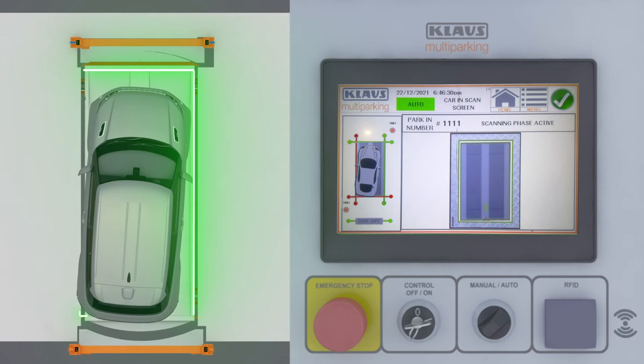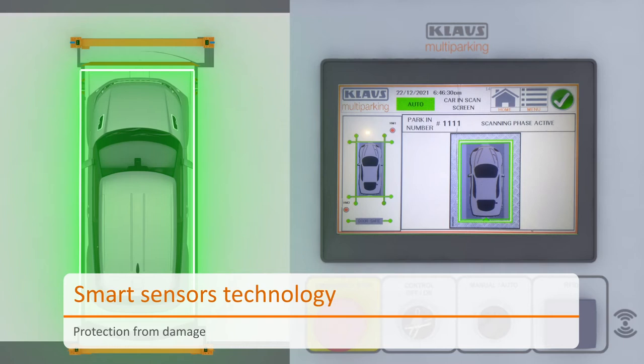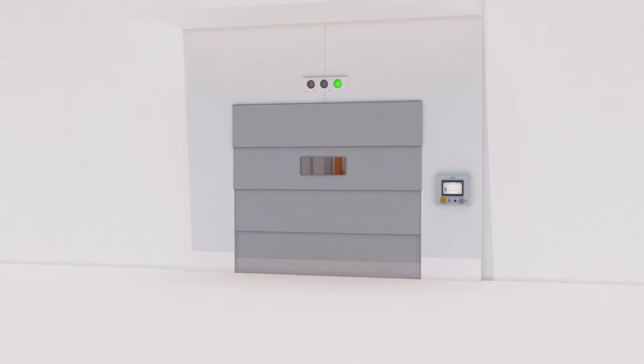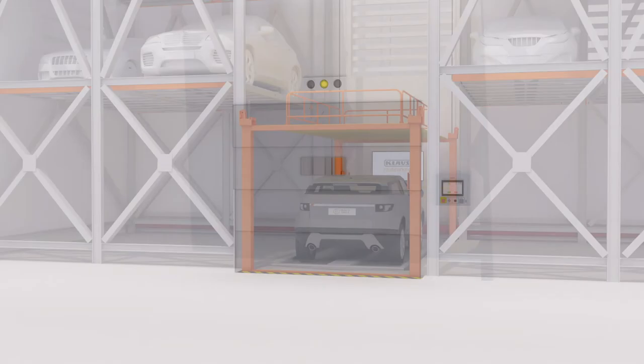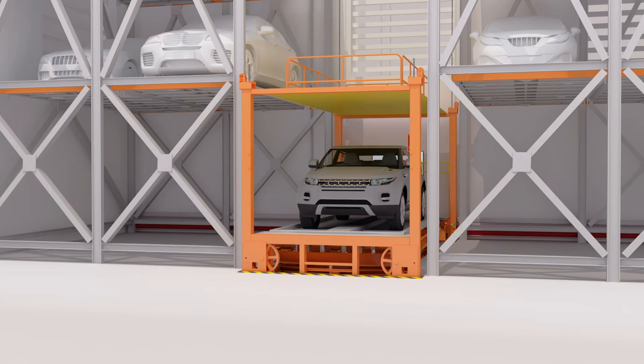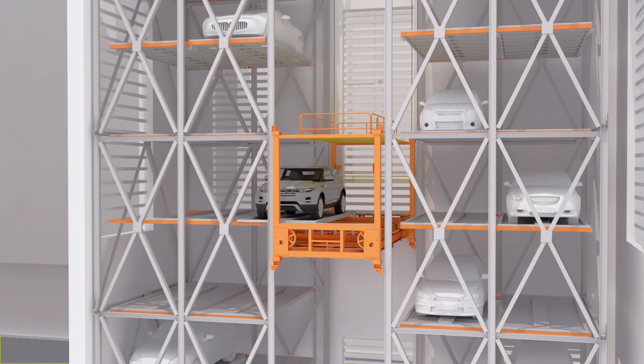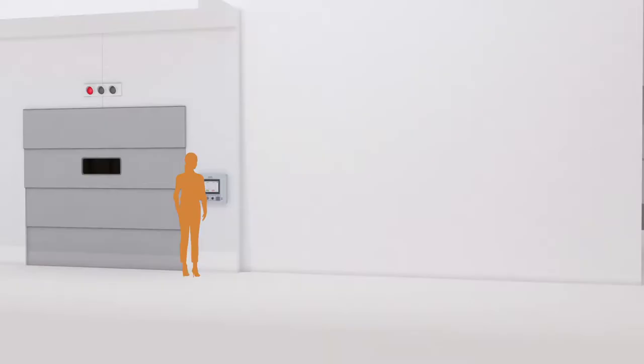Once the gate closes, the car lifter travels vertically and stops at the designated parking level. A horizontally moving pallet then carries the vehicle to the desired parking spot. Swift and speedy parking and retrieval is assured by the system.